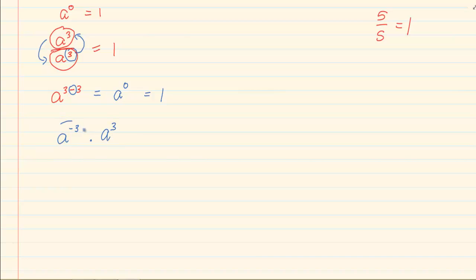If we were going to move this down using our exponential rules, as soon as we moved the a to the power of negative 3 down, it would change its sign. The power would change the sign to a positive, giving us a to the power of 3 over a to the power of 3, which is equal to 1.